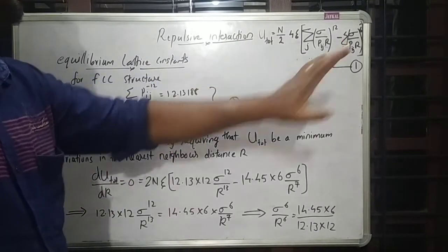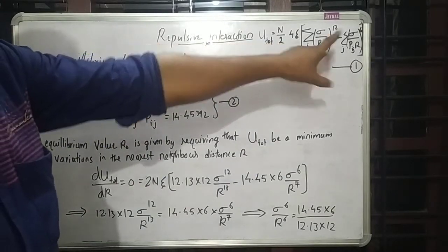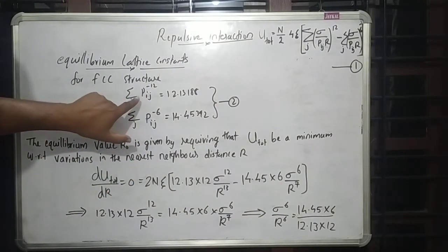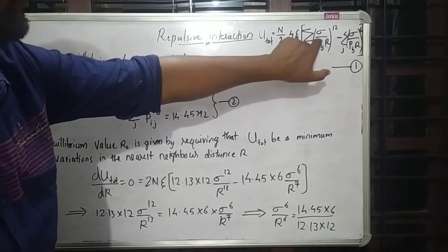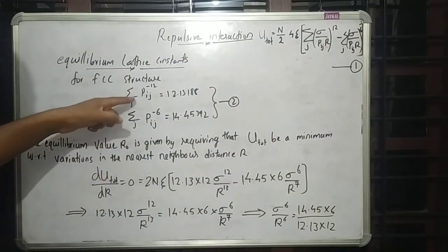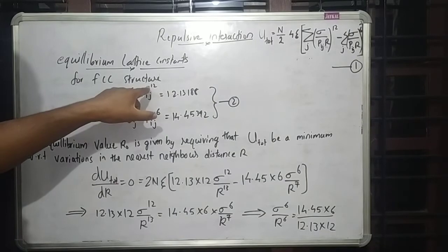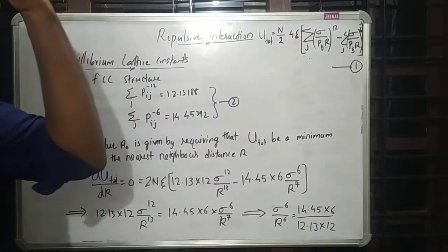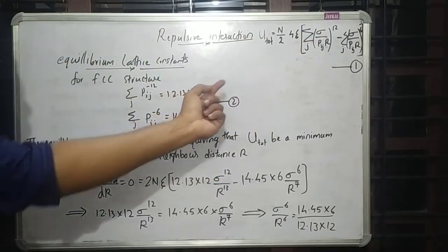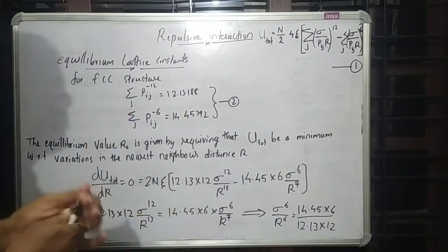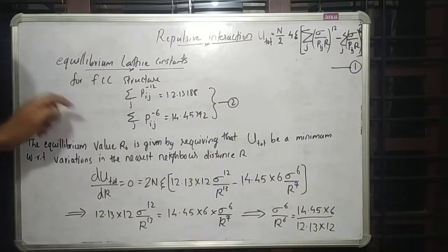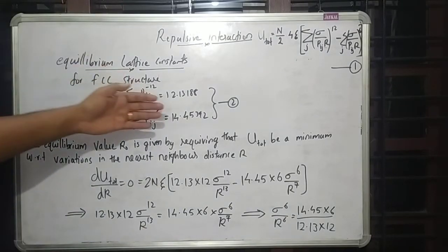This is equation 1 — the total Lennard-Jones potential. For FCC structure, the sum over j of 1 over p_ij raised to 12 equals 12.13188, which we can extend since interaction energy decreases for second and third nearest neighbors. And the sum over j of p_ij raised to minus 6 equals 14.45392. This is equation 2.